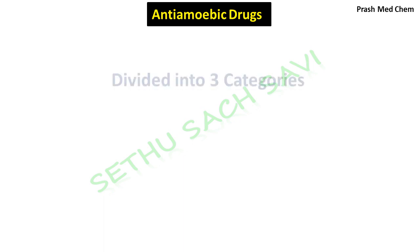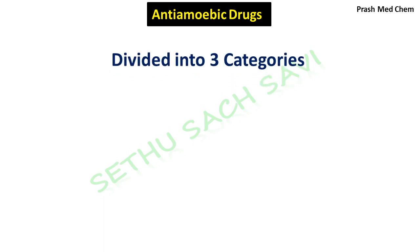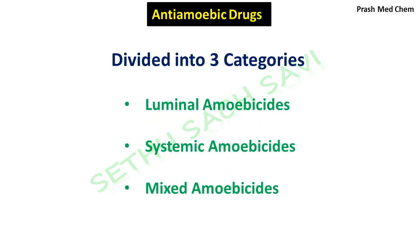So without any further delay, let's start. Anti-amoebic drugs are basically given for amoebiasis, which is an infectious disease caused by the protozoa called as Entamoeba histolytica. And the drugs can be broadly classified into three categories: luminal amoebicides, systemic amoebicides, and mixed amoebicides.